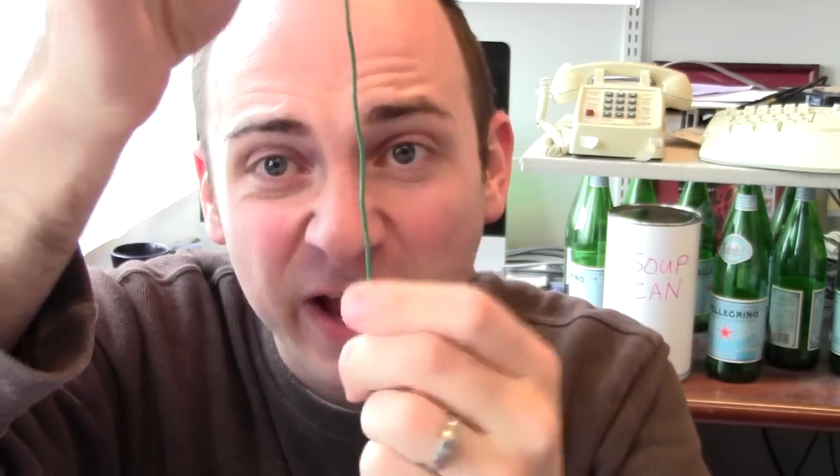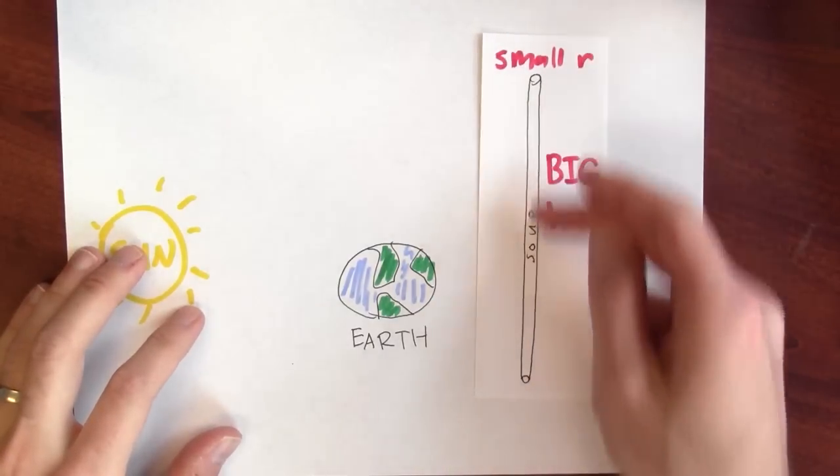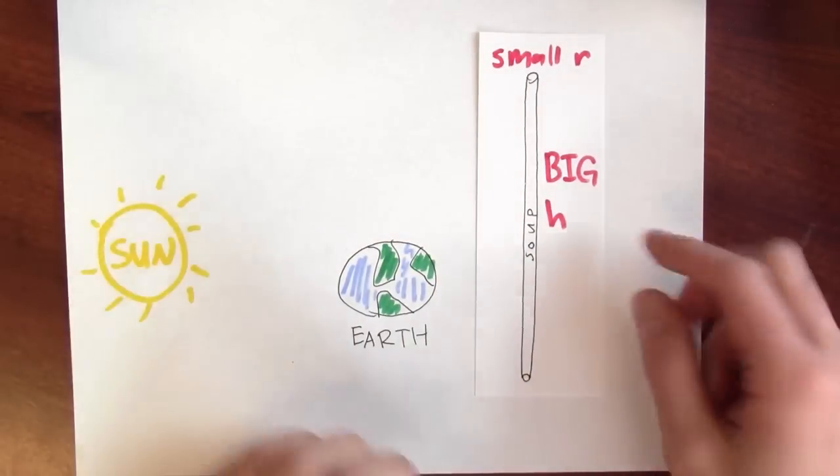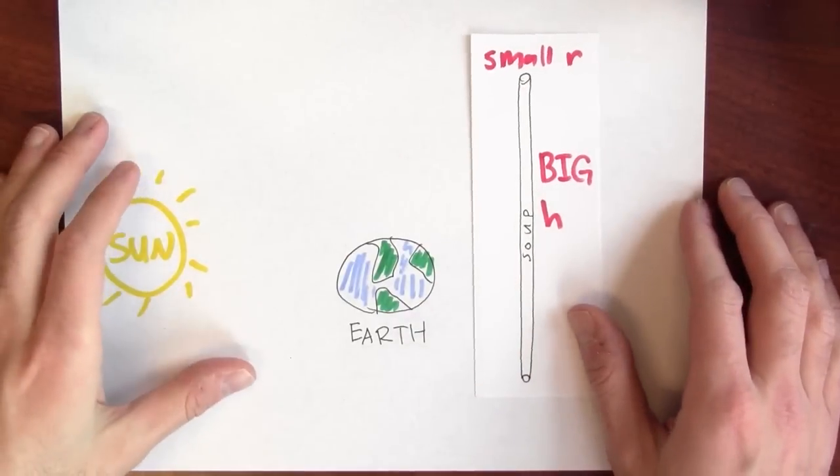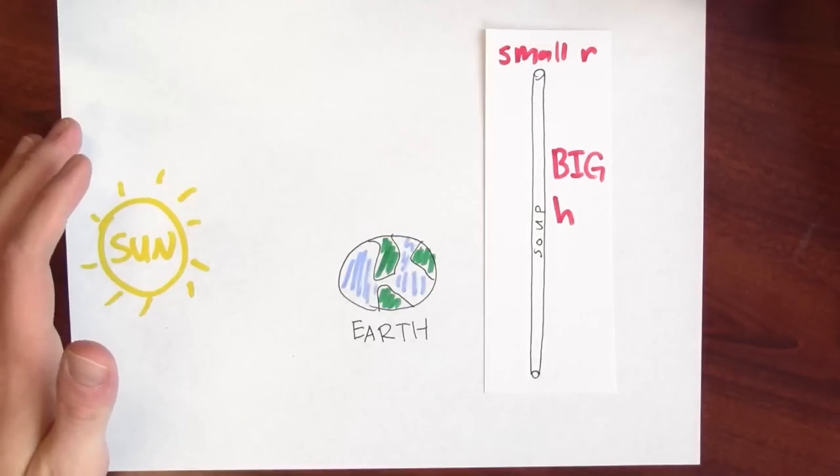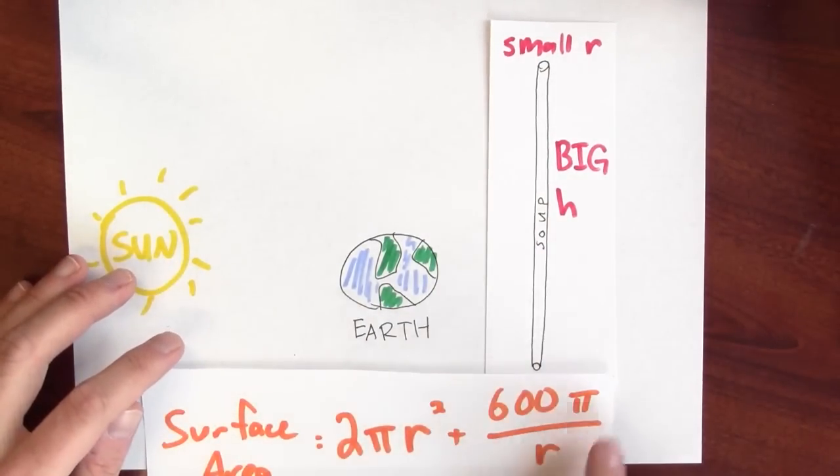Having the soup can shaped like a giant pancake is a terrible idea. But what if I went the other way? Here's a piece of wire. What if I made the soup can really long and thin like this piece of wire? Here is that long, thin wire shaped soup can. Even if I make the radius of my cylinder very small, if I make it long enough, then the soup can does hold 300 pi cubic centimeters of soup. Is this a really smart choice to minimize surface area?